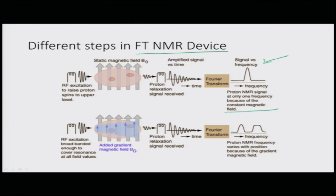With a single constant magnetic field, the proton NMR signal appears at only one frequency; broadband RF excitation covers resonances of all fields. Adding a gradient magnetic field B_G and applying Fourier transform to the proton relaxation signal yields NMR frequency variation with position, because the field gradient is also applied. These are various ways of doing NMR that can be developed for many different applications.